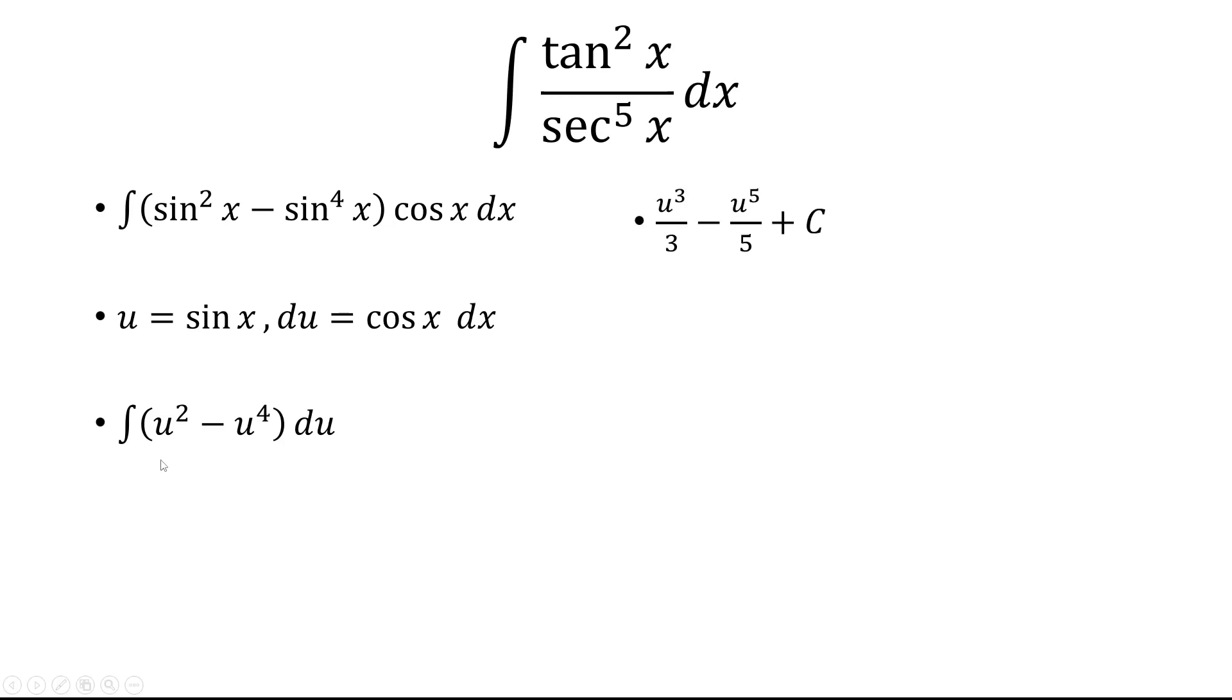The antiderivative of u squared is u cubed over 3. Antiderivative of u to the fourth is u to the fifth over 5. Replace u with sine. And we have sine cubed over 3 minus sine to the fifth over 5 plus c.